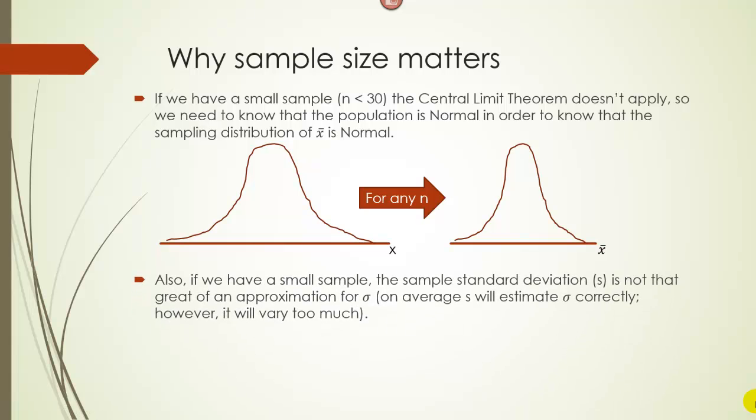If we have a small sample, we have another problem as well. The sample standard deviation S is used to estimate the population standard deviation sigma, but if we have a small sample, that approximation is not going to be very good. S is considered an unbiased estimator for sigma — meaning on average it will be correct — but it does vary a lot.